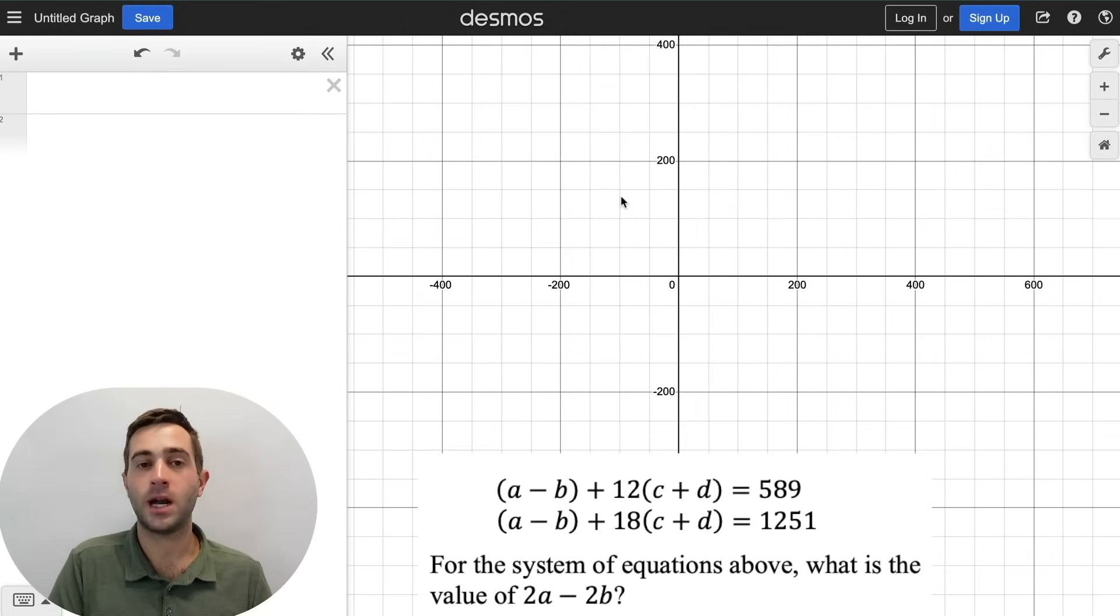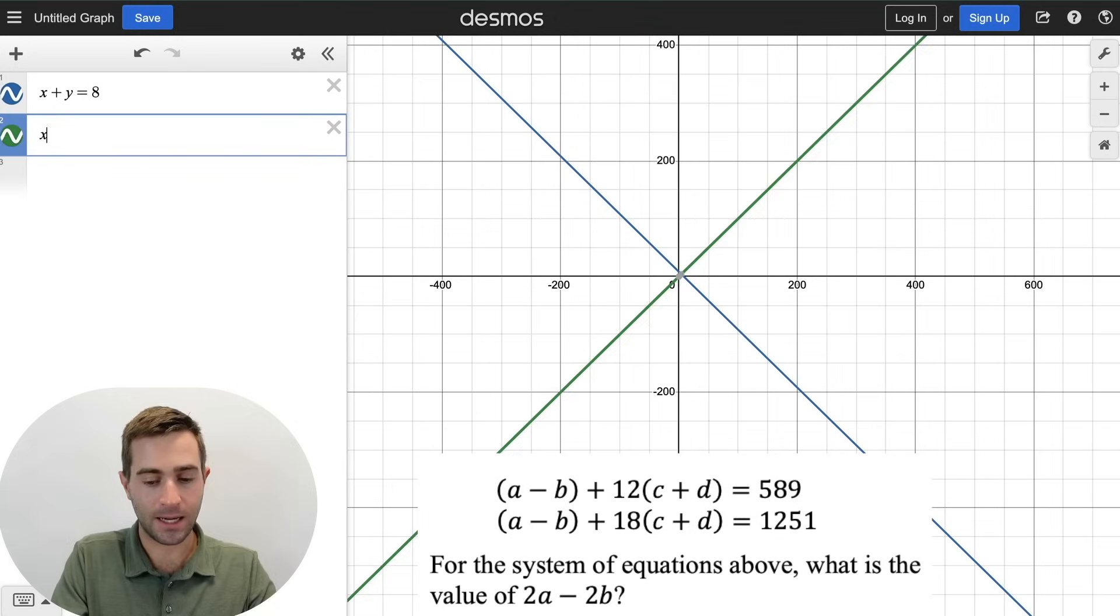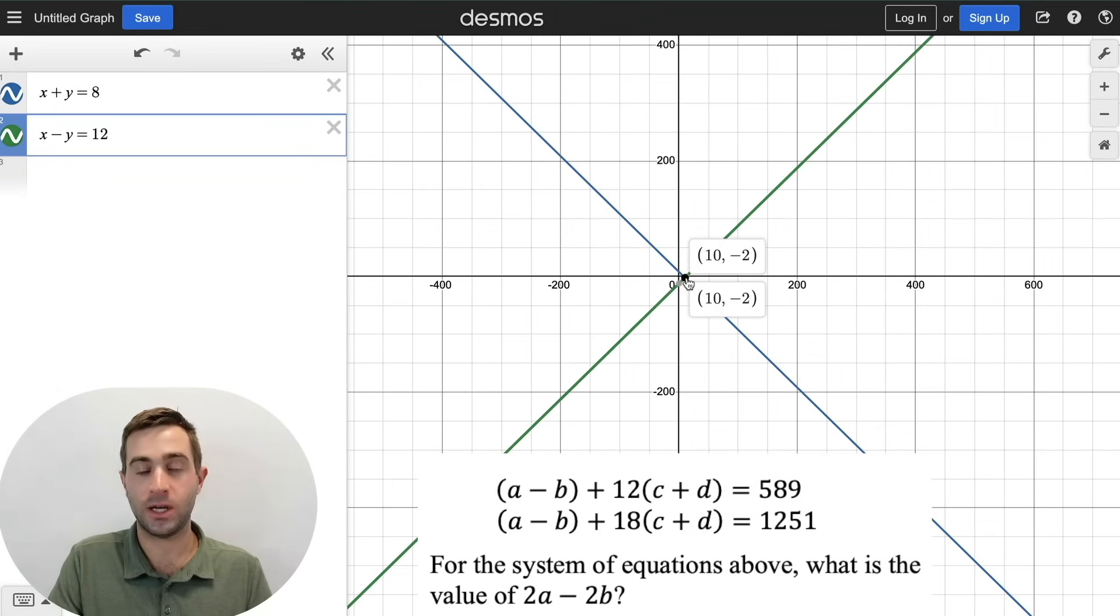Now, one of the next things that I predict you're going to see on your digital SAT is the SAT playing defense against you just being able to simply plug in a ton of stuff into Desmos. And one of the most common places you're going to see this is with systems of equations. Now, if we have a really basic system of equations like x plus y equals 8 and x minus y equals 12, we can just graph these in Desmos and we can find our point of intersection. We're in and out of the question really easily. So Desmos is going to kind of block you from doing this by putting in a bunch of variables like we see here.